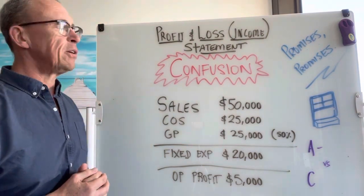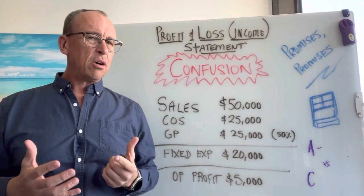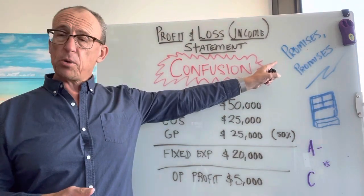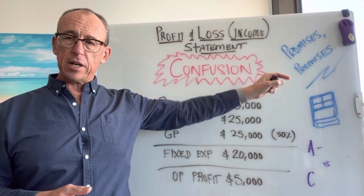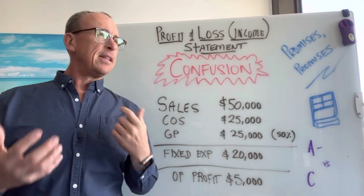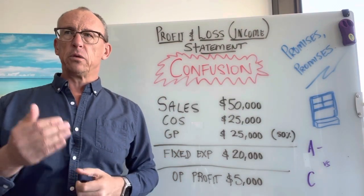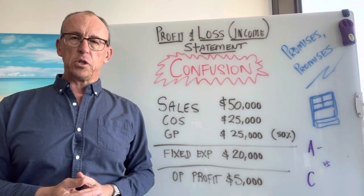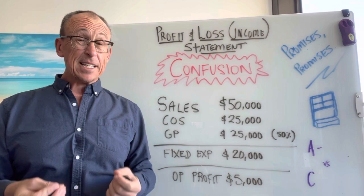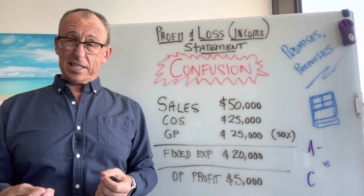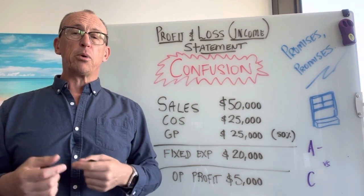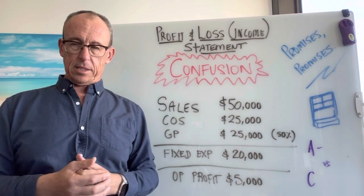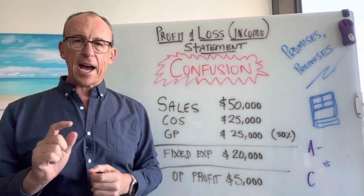The first thing we need to be clear on is that profit's not really real — it's not cash. Promises, promises. Profit is what the accountants have a funky definition for, called 'future financial benefit.' So this is the first thing that causes confusion: it's not actually money, it's theory. When you're looking at your profit, it's a measure of how well you've run your business. It's not actually cash.